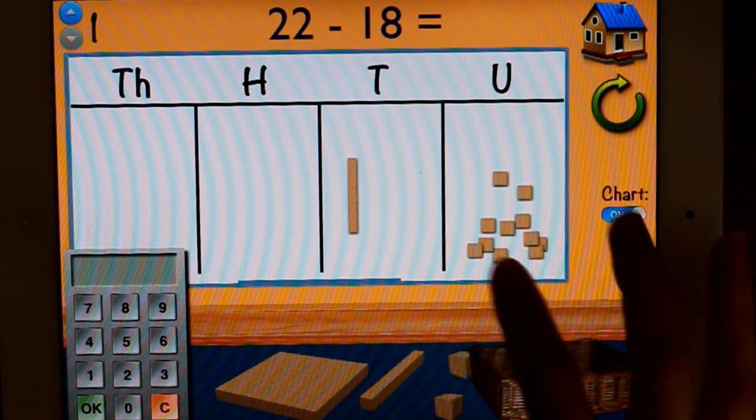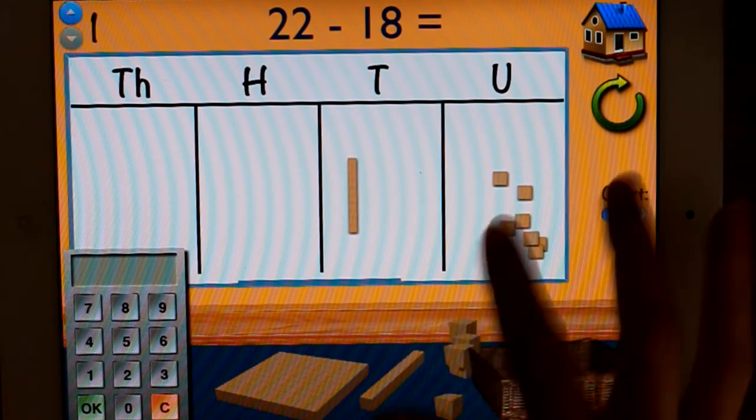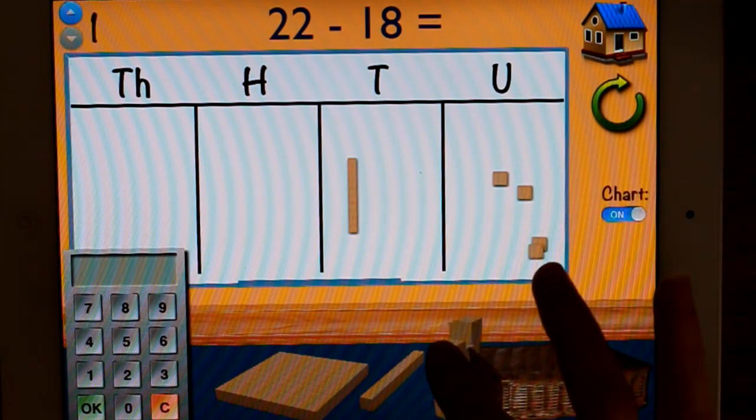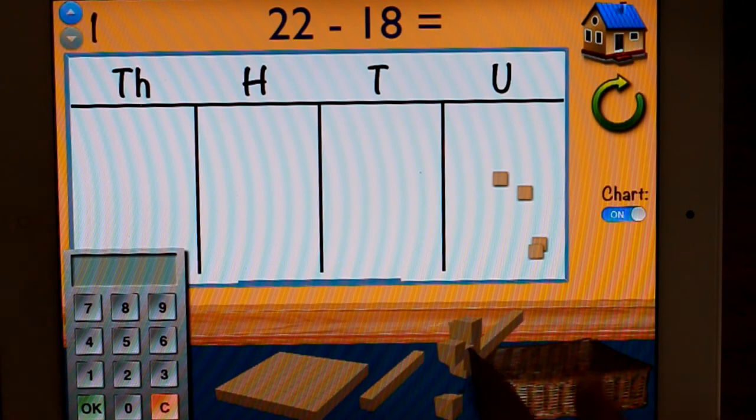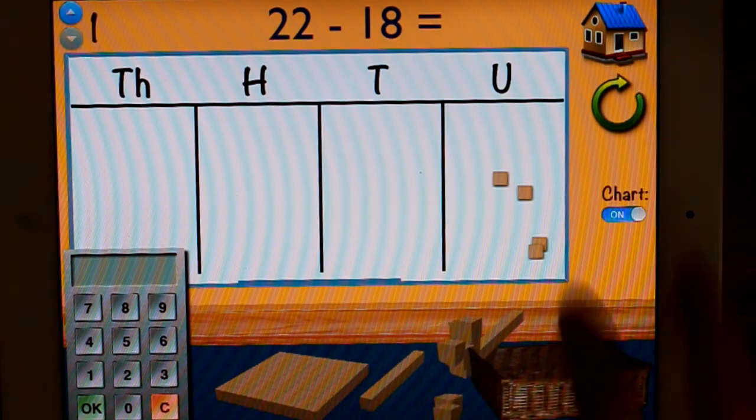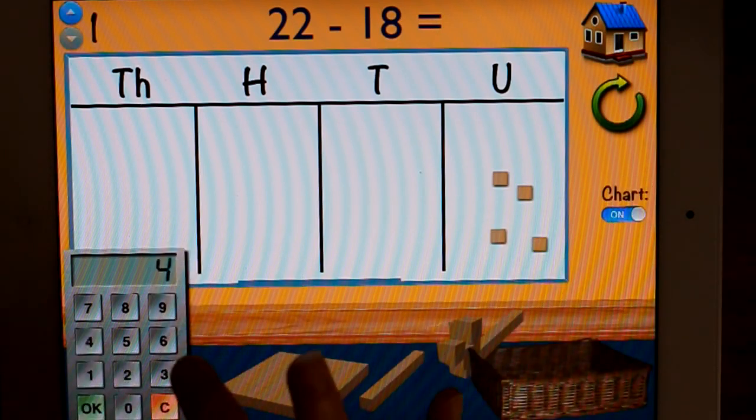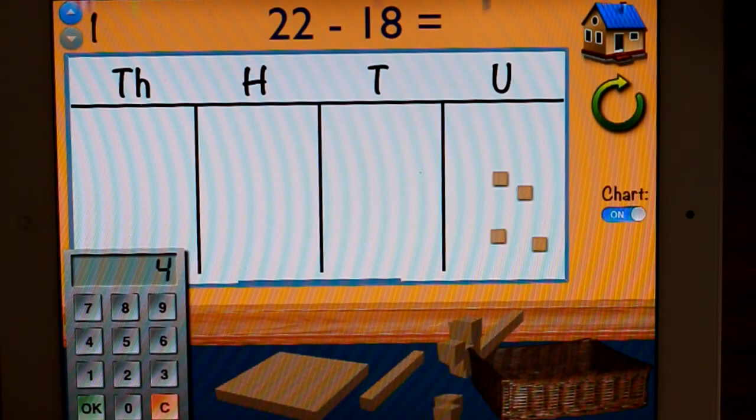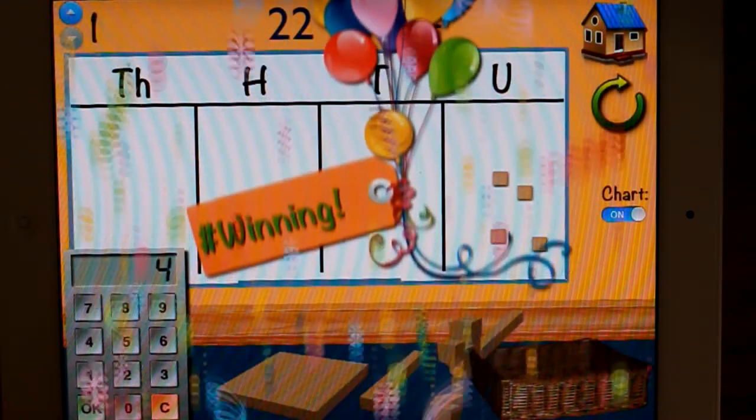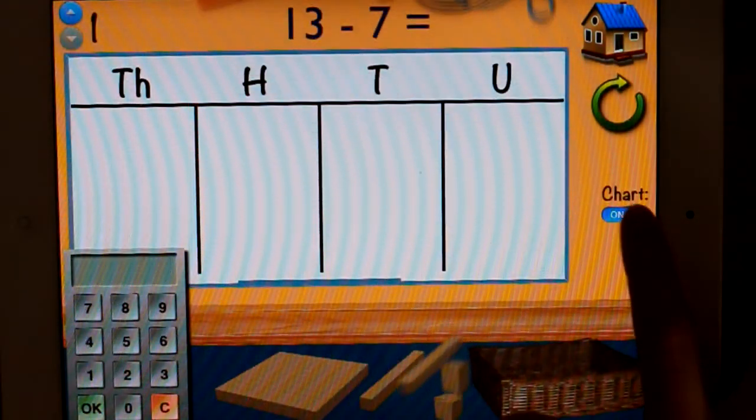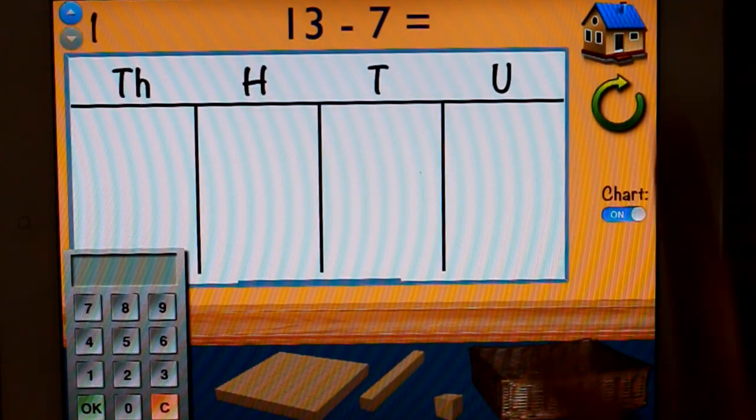Particularly when you're using real blocks, but it's a good habit to do. So, take away 8. Put them anywhere. 1, 2, 3, 4, 5, 6, 7, 8, and a 10. And then count what's left of 4. All done. And, of course, you can turn the chart off if that's what you so wish to do.